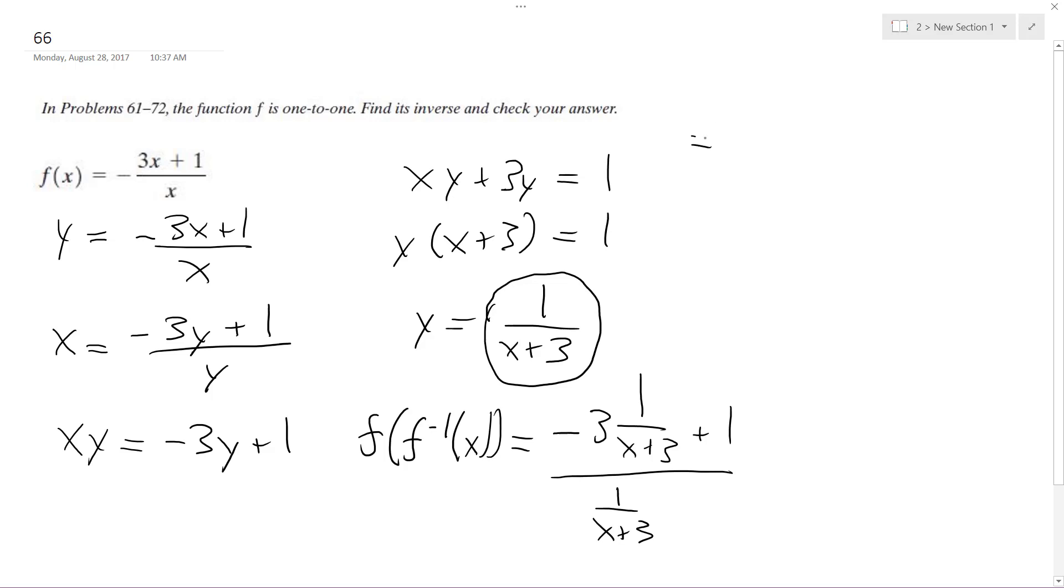So this becomes negative 3 plus x plus 3. I'm getting a common denominator here. I multiplied the 1 right here by the x plus 3, so it can all be over x plus 3, and this is over, so the x on the bottom is just 1 over x plus 3.